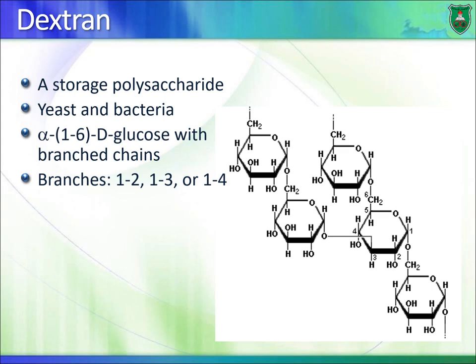Dextran is a storage polysaccharide found mainly in yeast and bacteria. It is also a homopolysaccharide made of glucose residues and is highly branched. Unlike glycogen and starch, the main chain of dextran uses alpha-1,6 glycosidic bonds, and its branching points are variable, occurring at positions 1-2, 1-3, or 1-4.